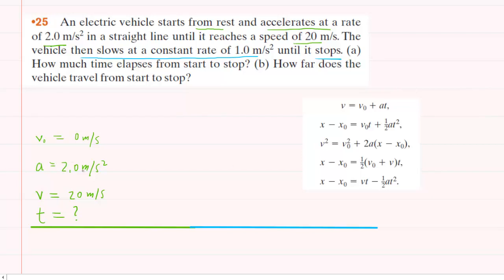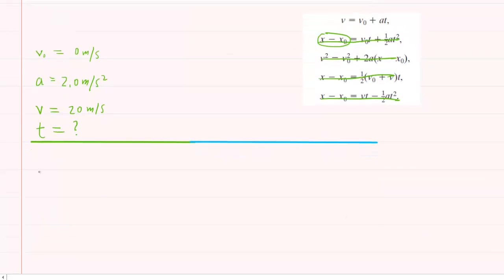You'll notice that we don't really want the displacement right now, so any equation involving displacement can be discarded. For example, this equation has displacement in it, so we can cross that off. Same thing with this equation and this equation and this one. So really, that leaves us with the top equation. So why don't we go ahead and write it down here.